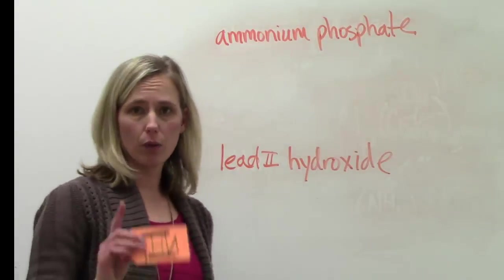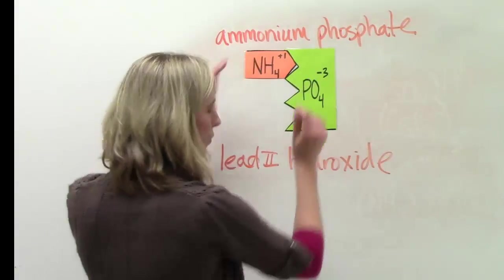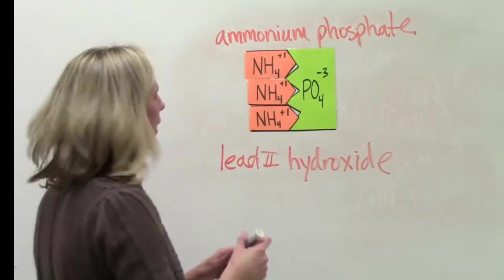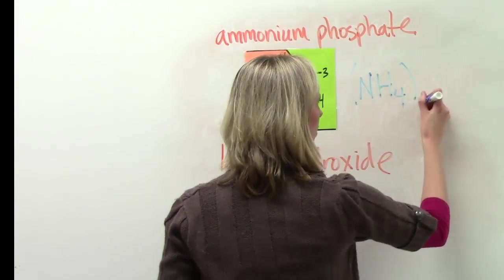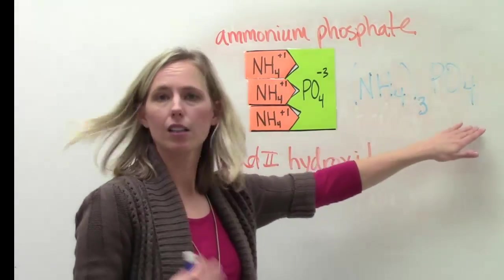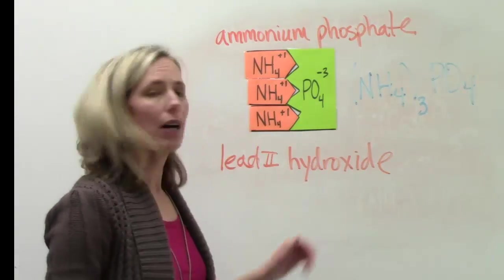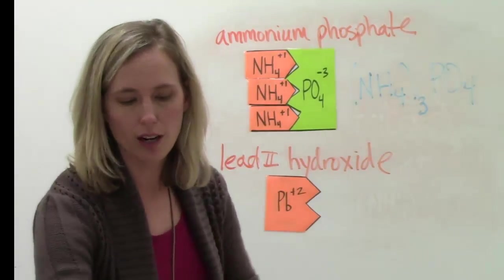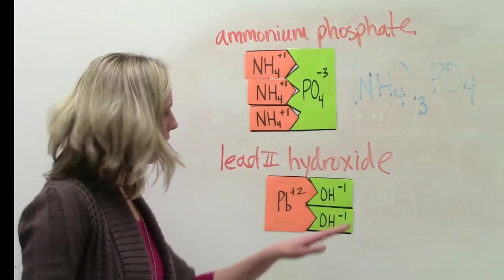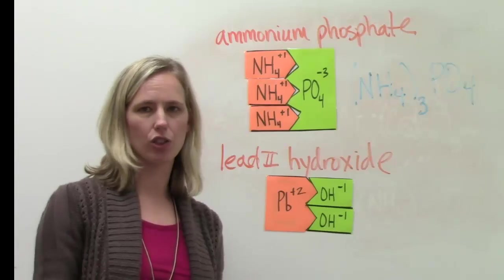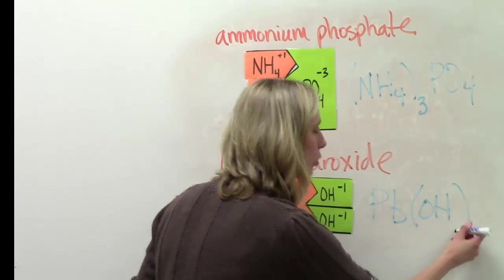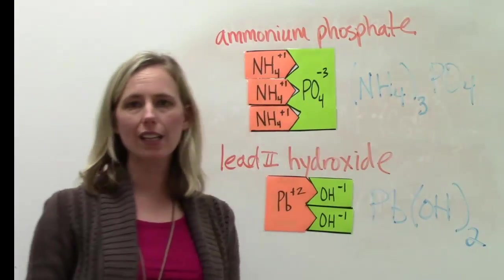For ammonium phosphate, we've got two polyatomic ions: ammonium with a positive one and phosphate with a negative three. To make this neutral, we need three ammoniums to cancel out that phosphate. The formula is (NH4)₃PO4 — the first polyatomic ion is in parentheses because we need three; the second is not, because we only need one. For lead two hydroxide, with a positive two charge and hydroxide OH being a polyatomic ion containing oxygen and hydrogen, we need two hydroxides to cancel out with the lead: Pb(OH)₂.